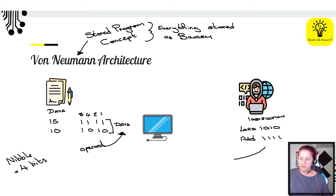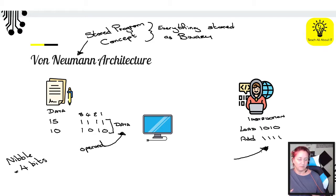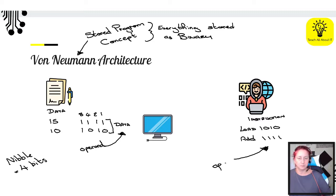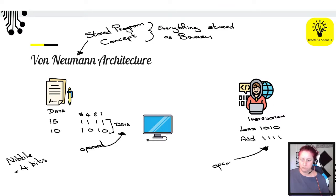If we had 1010 and 1111 in our instruction set, 1010 could mean load something — load a piece of data. And if we get 1111 as an instruction, that means add. You can see there's potential for confusion: 1111 could mean 15, or it could mean add. When talking about these inside our fetch-decode-execute cycle, we have another keyword. We've got our data, which is the operand, and then we have another O keyword to talk about the instruction itself — the opcode.